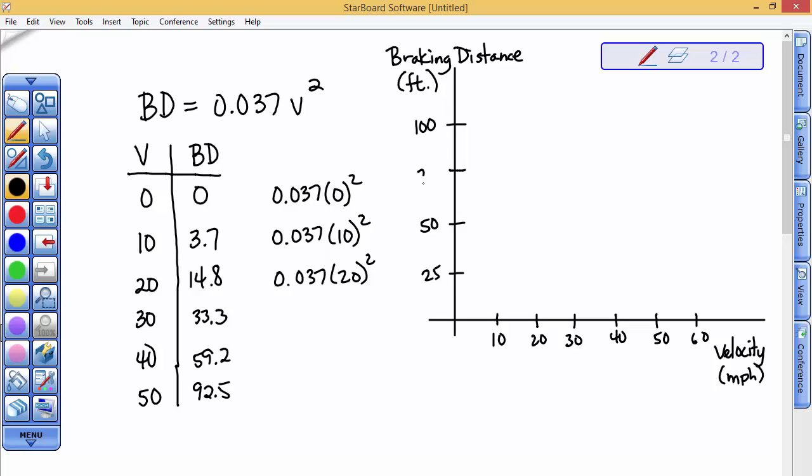A lot of people will just go 0, 3.7, 14.8, 33.3, 59. That makes your picture look linear, but this is a quadratic equation. It should look like this. A quadratic equation should. So let's go ahead and plot the data points.